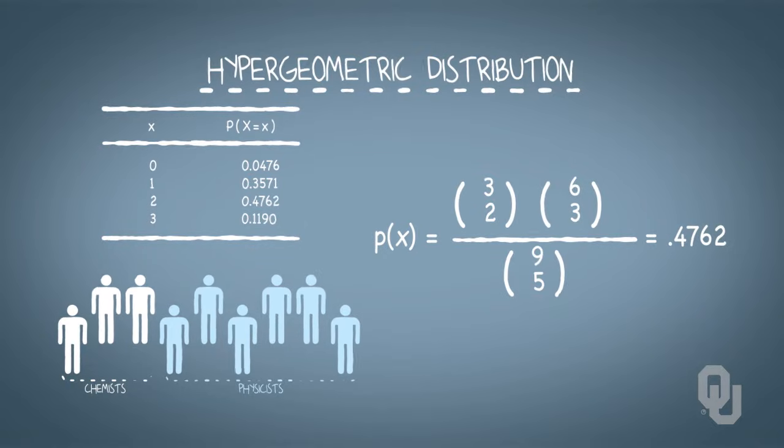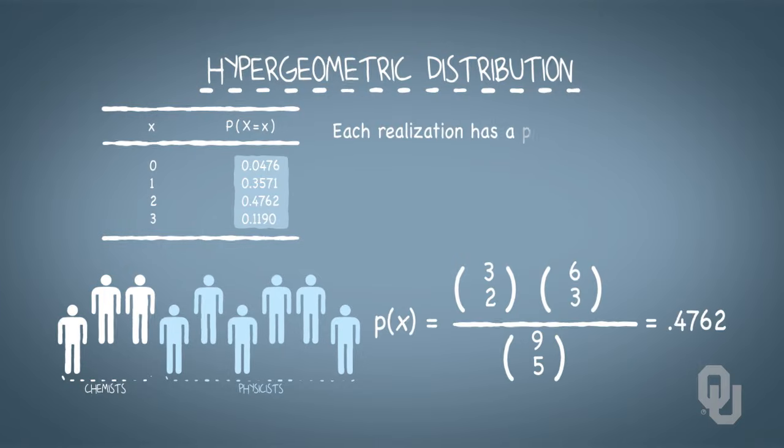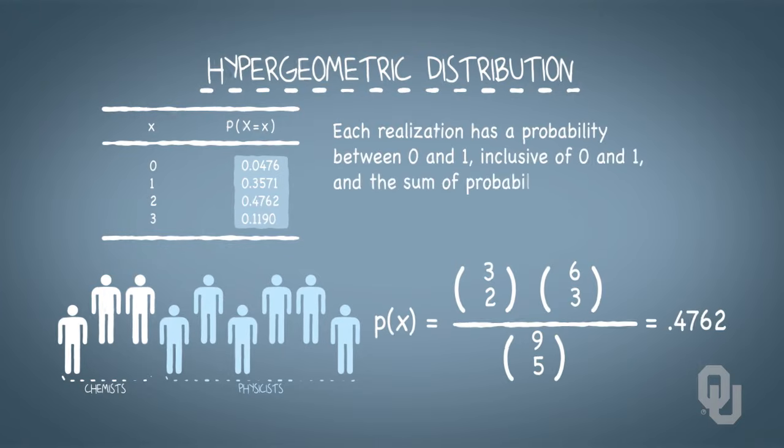Recall again the properties of probability. Each realization has a probability between 0 and 1, inclusive of 0 and 1, and the sum of probabilities of all realizations must be 1, or maybe a little off due to rounding errors.